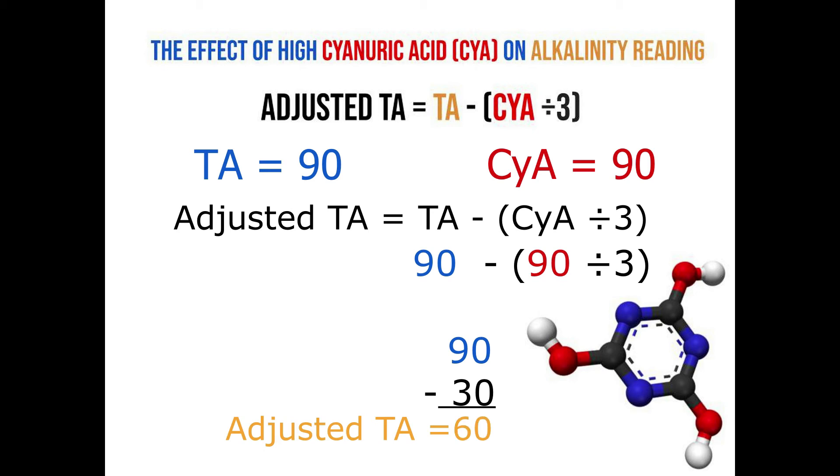Now you use this number to make decisions on if you need to fix your total alkalinity or not. If our recommended range for our total alkalinity is 80 to 120 ppm, so this 60 is not in range.